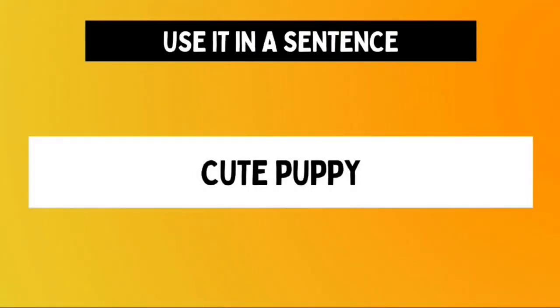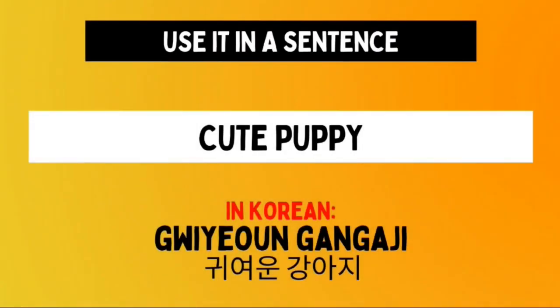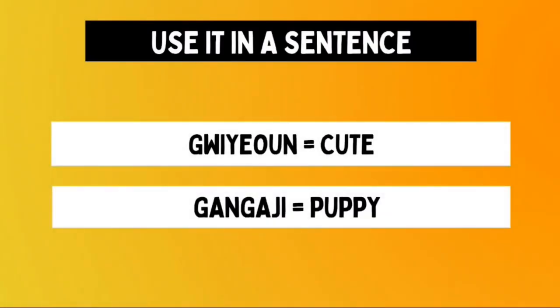Now let's look at this example English phrase: 'cute puppy.' The Korean translation of 'cute puppy' is kyoun kangaji. The first part is kyoun, our word for today, which means cute. The second part is kangaji, the Korean term for a puppy or young dog. So combining kyoun and kangaji gives us the phrase meaning 'cute puppy.'